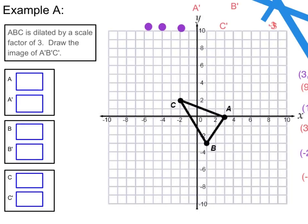Now let's take a look at example A. It says ABC is dilated by a scale factor of 3. Draw the image of A prime, B prime, C prime. The first thing we need to do is remember how we perform a dilation — we multiply by the scale factor. In this case, our scale factor is 3, so we're going to be multiplying every vertex by 3. However, we need to know what the vertices are in order to do that.